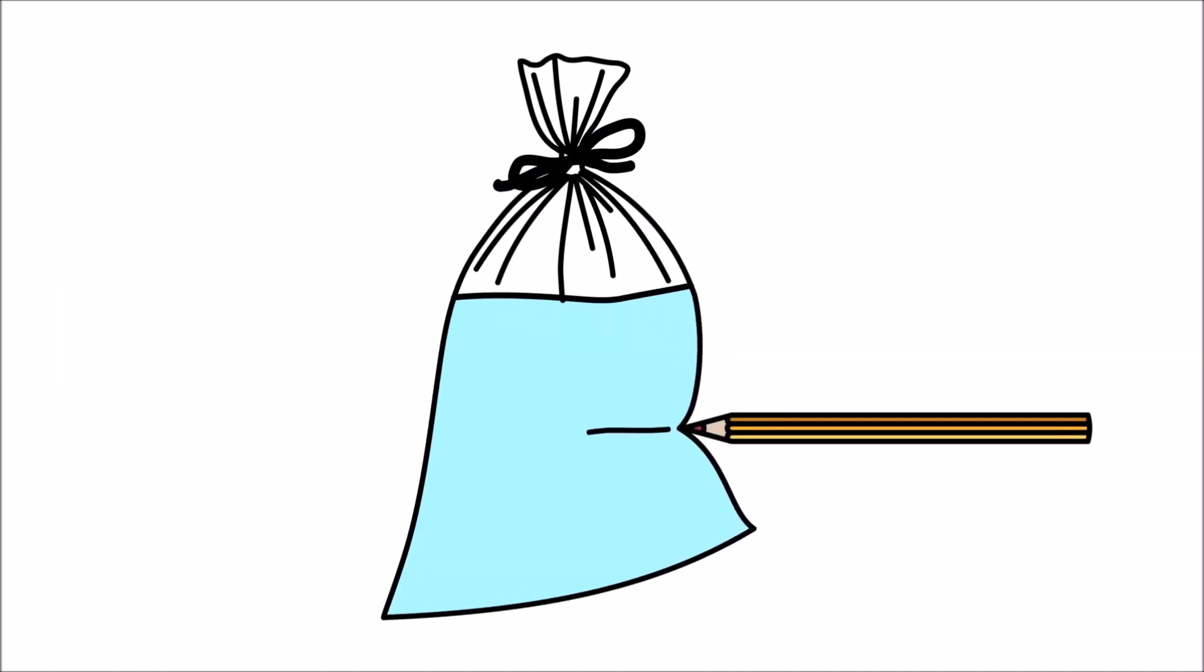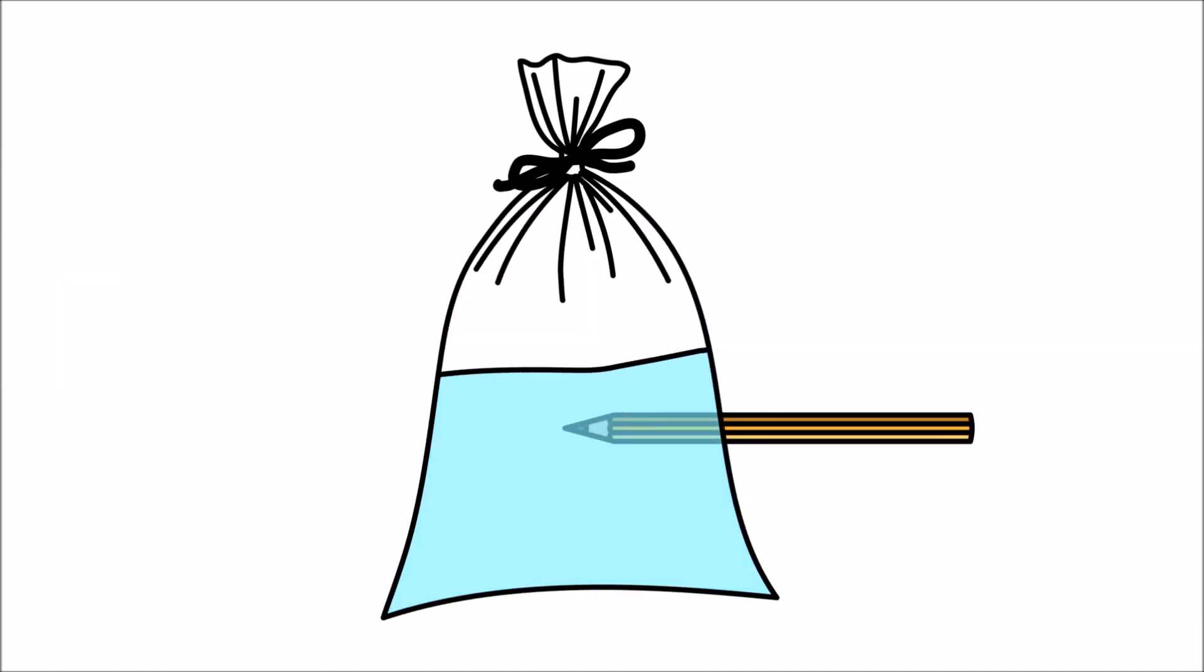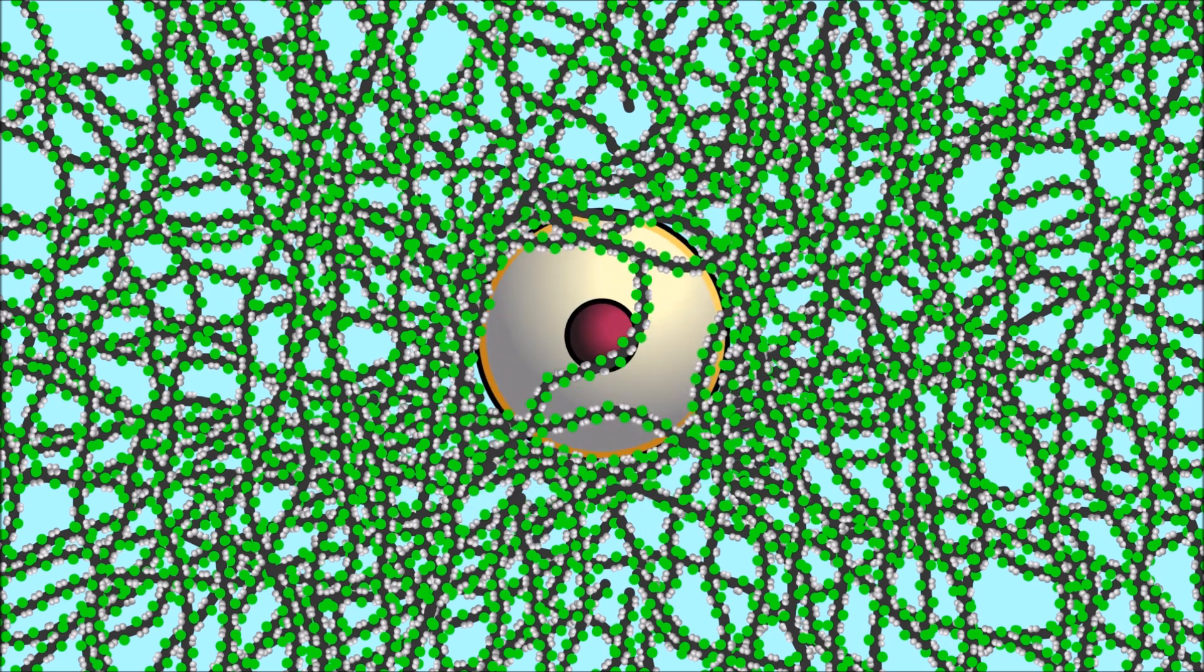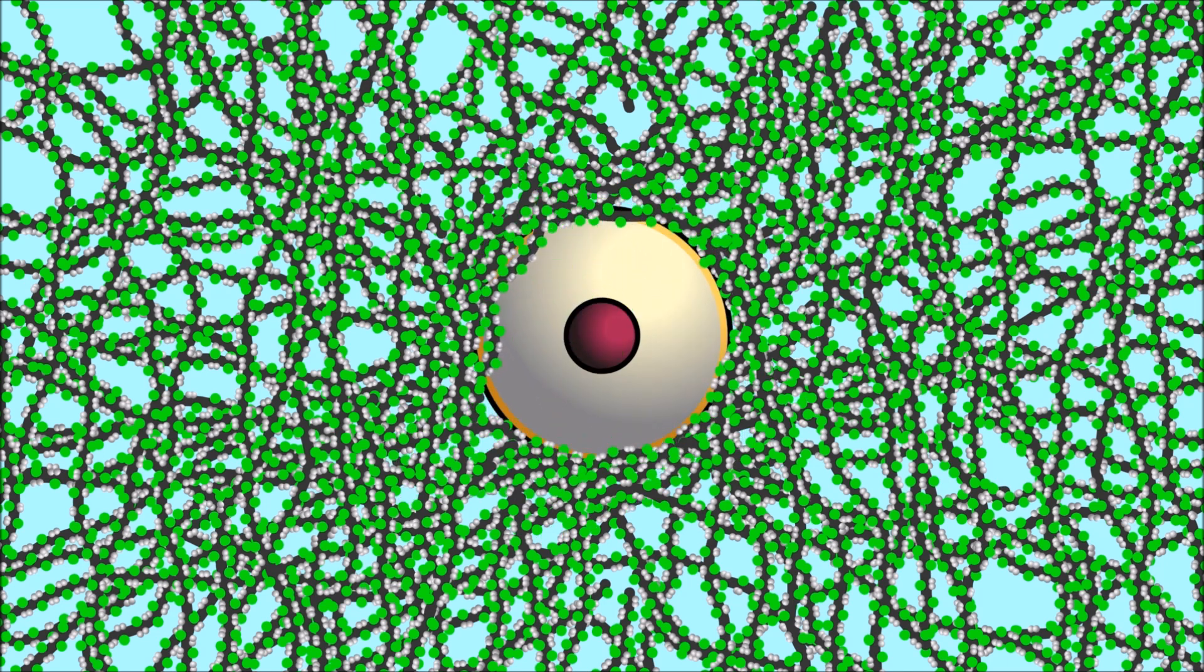When the sharpened pencil pierces through the bag, it pushes the polymer strands apart and slides in between them. Because the strands are flexible, they help form a temporary seal around the pencil.